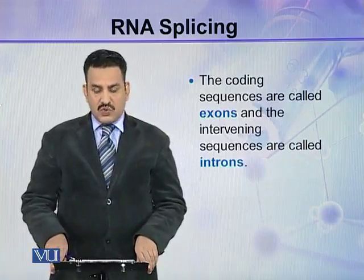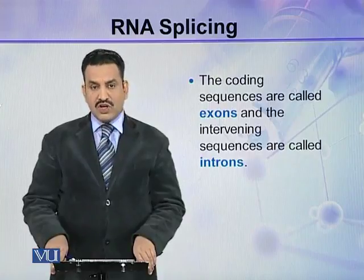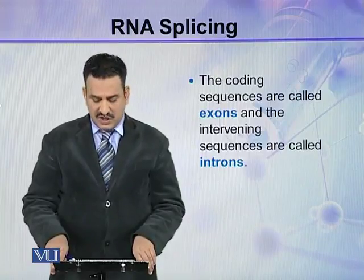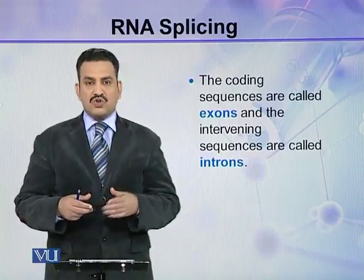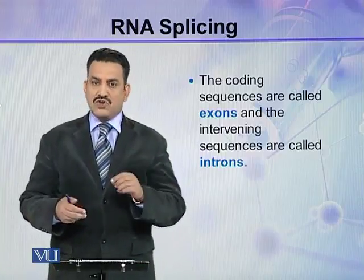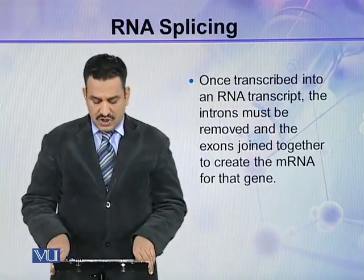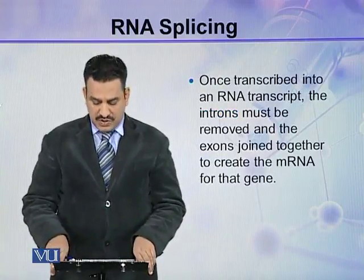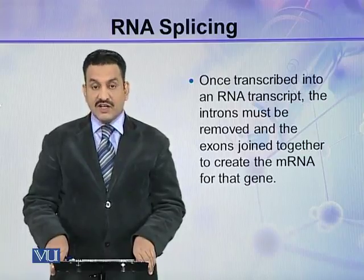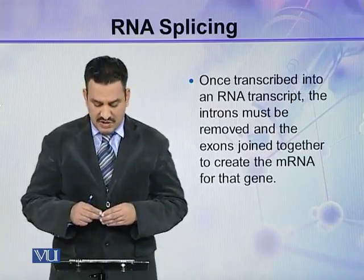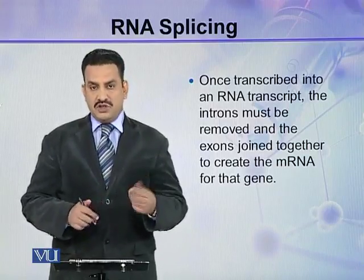The coding sequences are called exons and the non-coding or intervening sequences are called introns. So a gene is composed of exons and introns. Once transcribed into an RNA transcript, the introns must be removed and the exons must be joined together to create the correct mRNA of that gene.